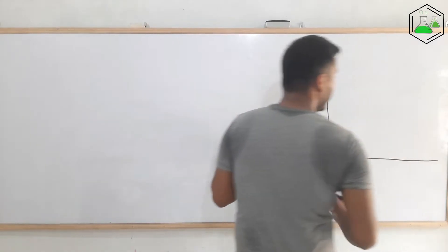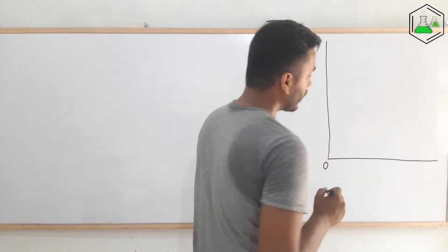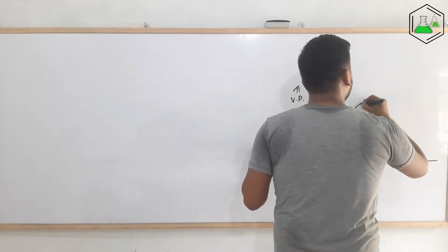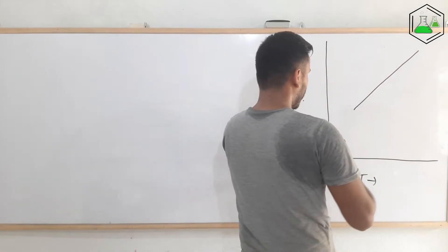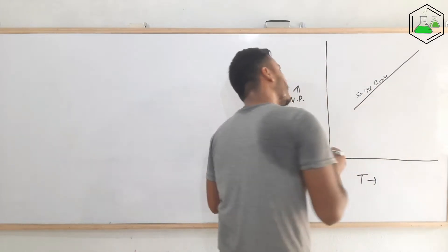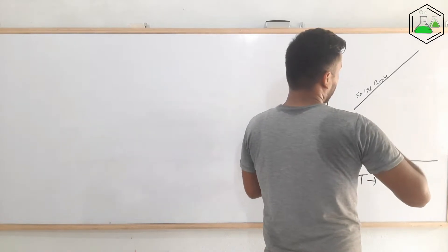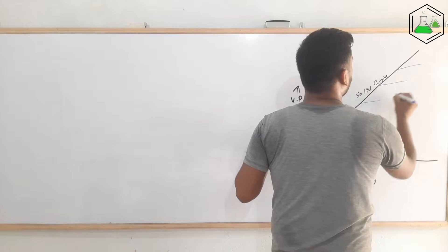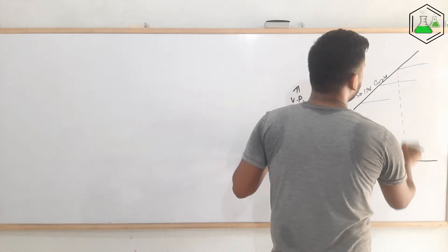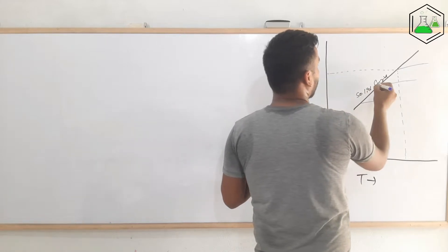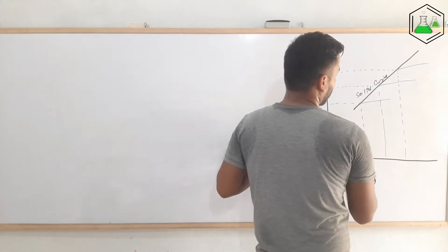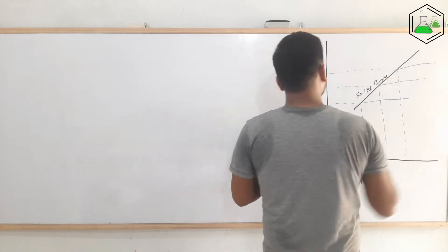I will tell you the trick of making this graph. This is the origin. On the x-axis we consider temperature, and on the y-axis we consider vapor pressure, and we draw a straight line. This straight line represents the solid curve, also called the sublimation curve. From here we draw three lines, and from each intersection point we draw a vertical line as well as a horizontal line.